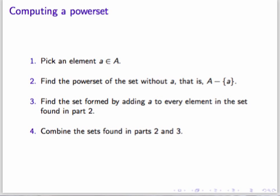Pick an element from the set A. By the way, if set A is represented by a list, you may as well pick the first, or head, element. Find the power set of what's left of set A. I hope that sounds like a recursive call. Now, add the element you removed back into every set in the power set you computed in step 2. Finally, combine the results of parts 2 and 3. One thing that's not obvious is how to do step 3. How do you add an element to each set in a set, or to each list in a list?